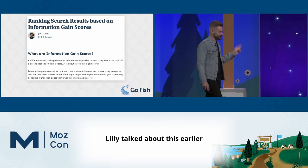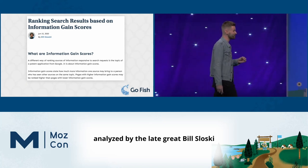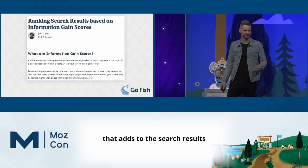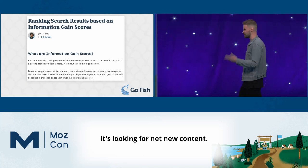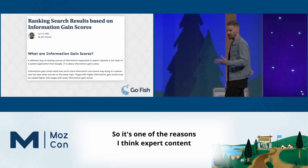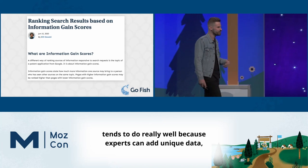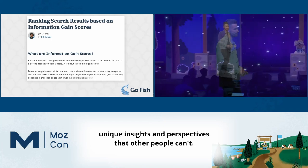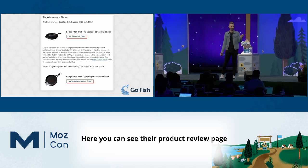Another concept to think about with on-page optimizations is information gain scores — analyzed by the late great Bill Slawski — where Google looks to reward content that adds to the search results and doesn't just repeat what's already out there. It's looking for net-new content. This is one of the reasons expert content tends to do well: experts can add unique data, unique insights, and perspectives that other people can't.